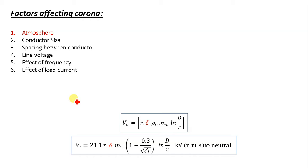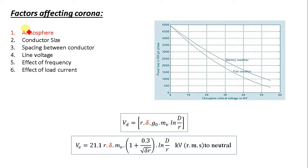The first factor is atmosphere. Corona is formed due to the ionization of air surrounding the conductor, and that is affected by the physical state of the atmosphere. In stormy weather the number of losses is more than in fair weather condition, and corona occurs at much less voltage compared to fair weather.